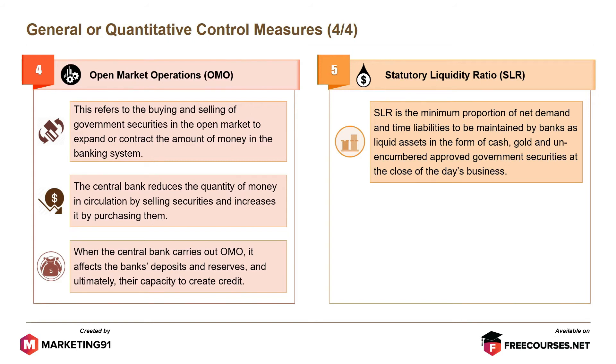Last is the statutory liquidity ratio or SLR. SLR is the minimum proportion of net demand and time liabilities to be maintained by banks as liquid assets in the form of cash, gold, and unencumbered approved government securities at the close of the day's business.